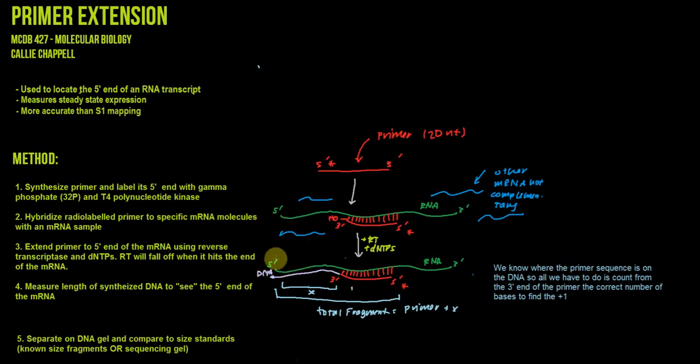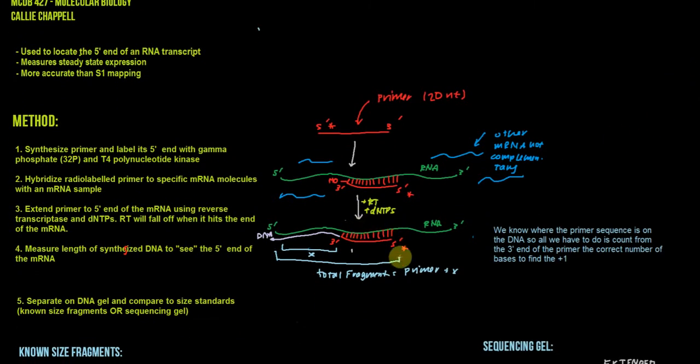And the next thing we're going to do is measure the length of the synthesized DNA to see the 5' end of the mRNA. And how do we do that? Well, what we're going to do is by using a gel and size standards, we're going to figure out the size of this fragment that's being produced. So that's the primer, and also the amount of newly synthesized DNA. And we can figure out the total length of the fragment by using a gel, and we already know the length of the primer, so we can figure out what this distance is here of this DNA. So ultimately, the key is we know where the primer sequence is in the DNA, so all we have to do is count from the 3' end of the primer, which is right here.